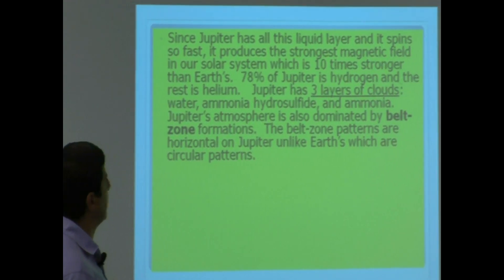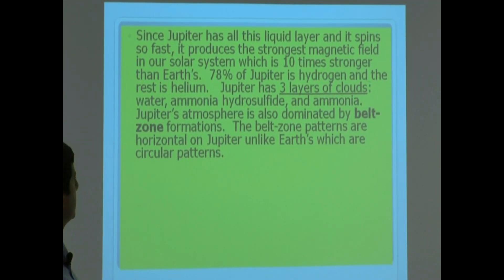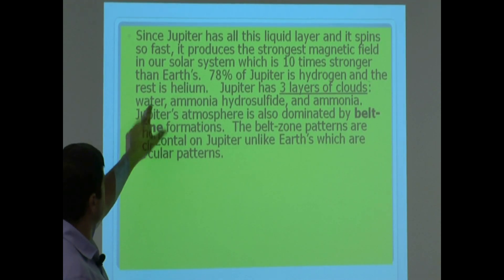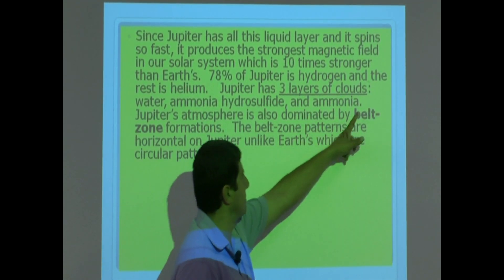Jupiter has three layers of clouds. Water, ammonia, hydrogen sulfide, and ammonia. So this is water, that's one layer. Ammonia, hydrogen sulfide, and ammonia.